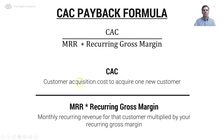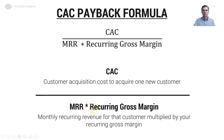CAC is the customer acquisition cost to acquire one new customer. MRR is not the average MRR of our entire customer base — we're using cohort MRR. So our recently acquired cohort of customers times our recurring gross margin, to figure out our CAC Payback Period in months.